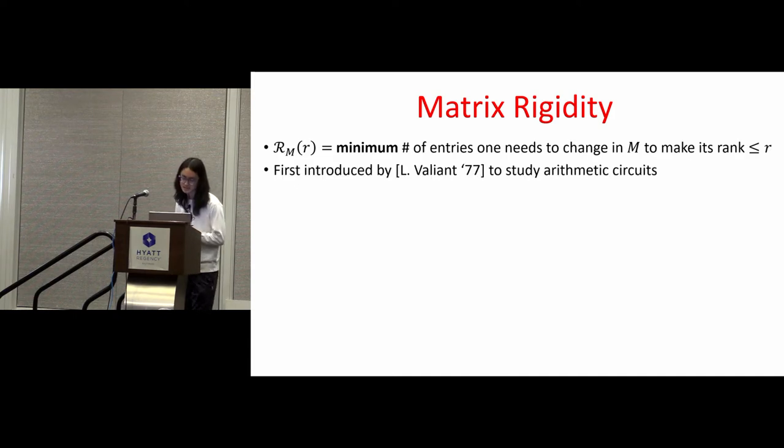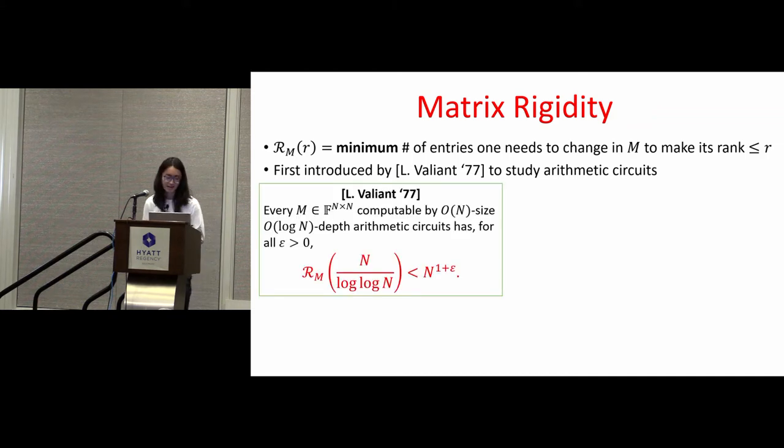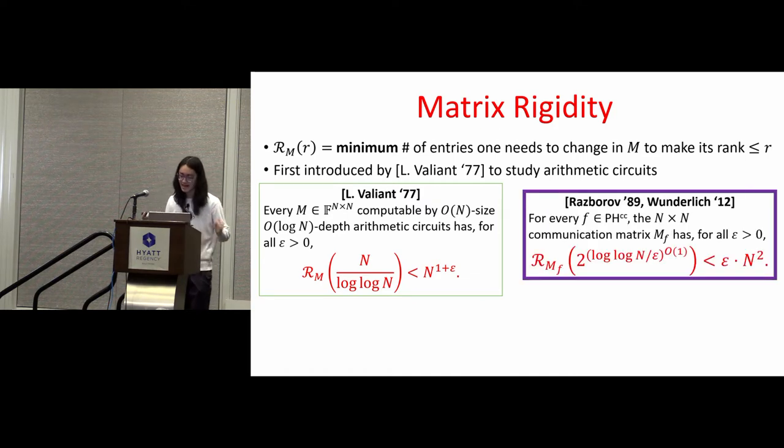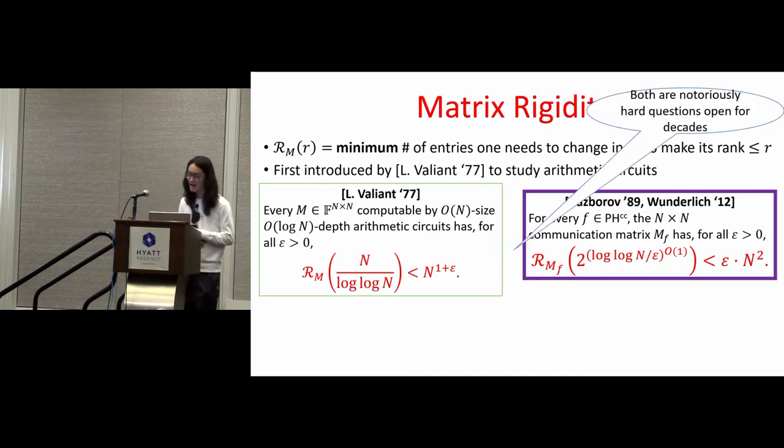This notion was first introduced by Leslie Valiant in 1977 to study arithmetic circuits. He showed that if we can construct a rigid matrix in the high rank and low error region, then we will have lower bounds against linear size and log n depth arithmetic circuits. Later, Razborov shows that constructing rigid matrix also have applications in communication complexity, specifically the lower bound is for the analog of polynomial time hierarchy which is called PHCC. Proving lower bounds against linear size log n depth arithmetic circuits or constructing hard functions for PHCC are both notoriously hard open questions for decades.